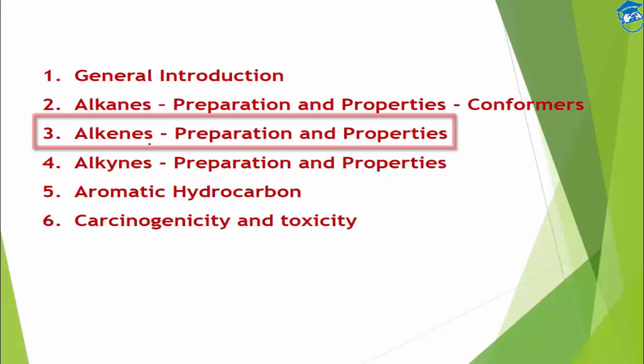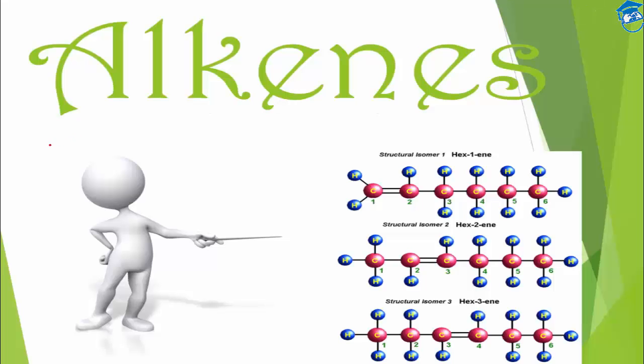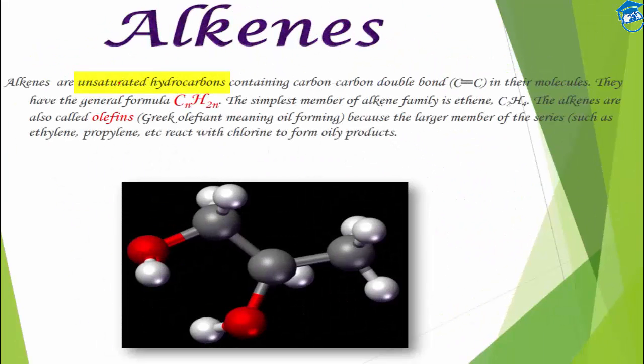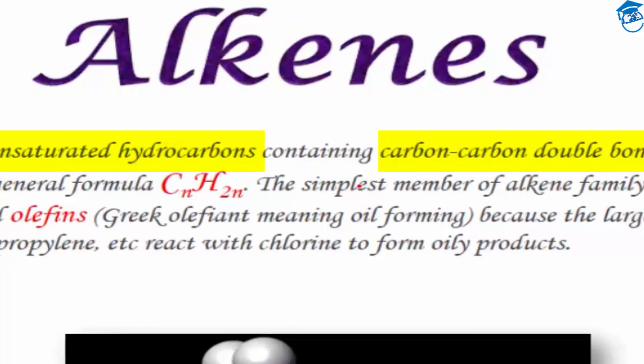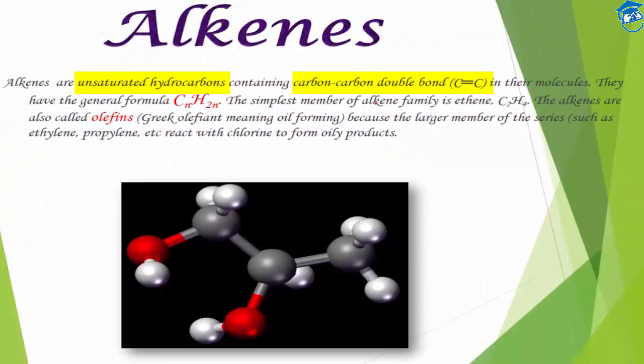Alkenes are unsaturated hydrocarbons because they do not have the maximum number of hydrogen that would be attached to the carbon atom, and they have a carbon-carbon double bond in their molecule. Their general formula is CnH2n, and the simplest member will be ethene, C2H4.